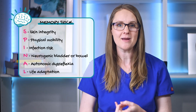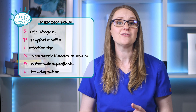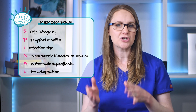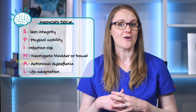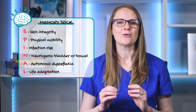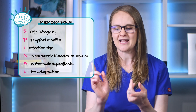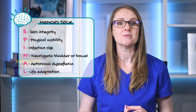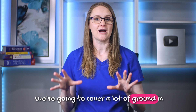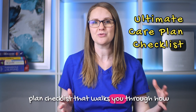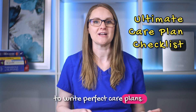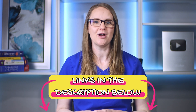S is for skin integrity, P for physical mobility, I for infection risk, N for neurogenic bladder or bowel — which could be a diagnosis like impaired urinary elimination or urinary retention — A for autonomic dysreflexia, and L for life adaptation, which could include things like ineffective coping and disturbed body image. Keep these in mind as we go through the steps, and you'll have everything you need to rock your care plans in nursing school. Be sure to snag my ultimate care plan checklist — the link is in the description below.